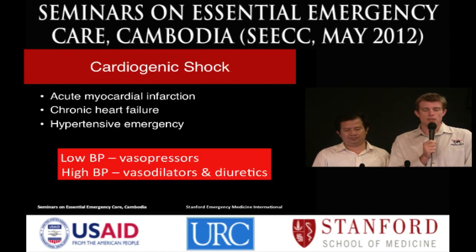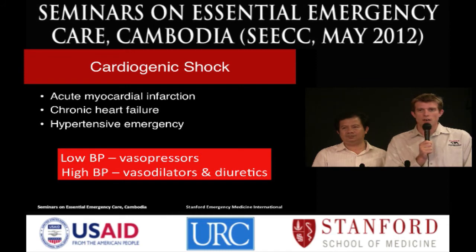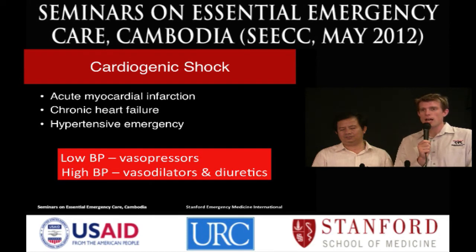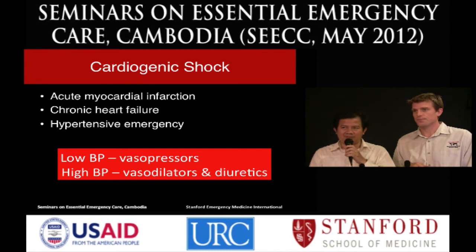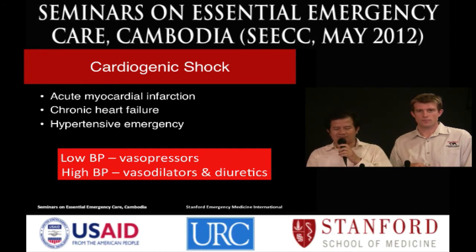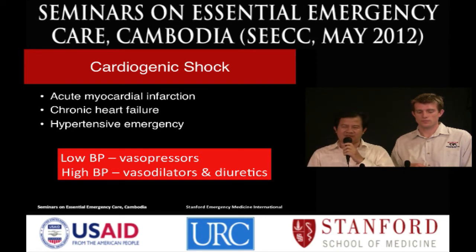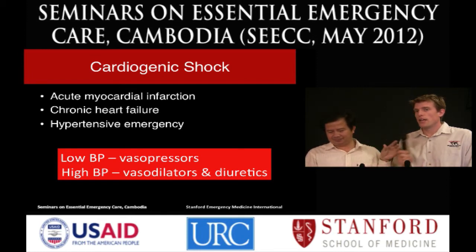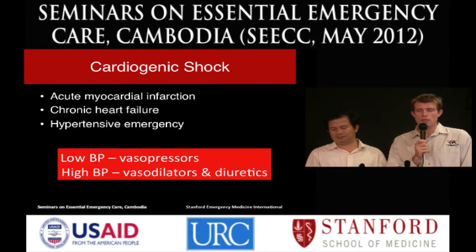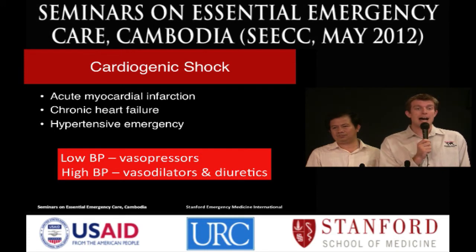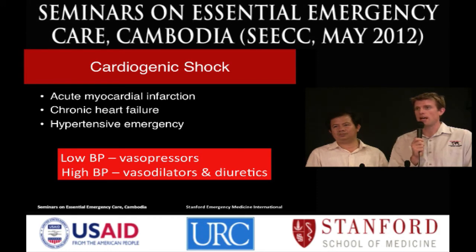There are a number of causes of cardiogenic shock, but the most common causes we're going to see are acute myocardial infarction or heart attack, chronic heart failure, and hypertensive emergency. To make the treatment easy, remember: if the blood pressure is very low, you're going to use a vasopressor; if the blood pressure is high, you're going to use a vasodilator and possibly diuretics.